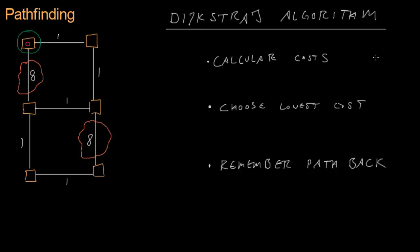We're going to set up our initial node and give it an initial path cost of 0, because we started there, so it took no effort to get there. Step 1 is to calculate the costs of each neighbor. We take the value in the current node and add the edge value. So 0 plus 1 is 1, meaning it costs 1 effort to reach that neighbor. To go through the obstacle edge, 0 plus 8 is 8. We then choose the lower of the two costs: 1 is less than 8, so we choose 1.